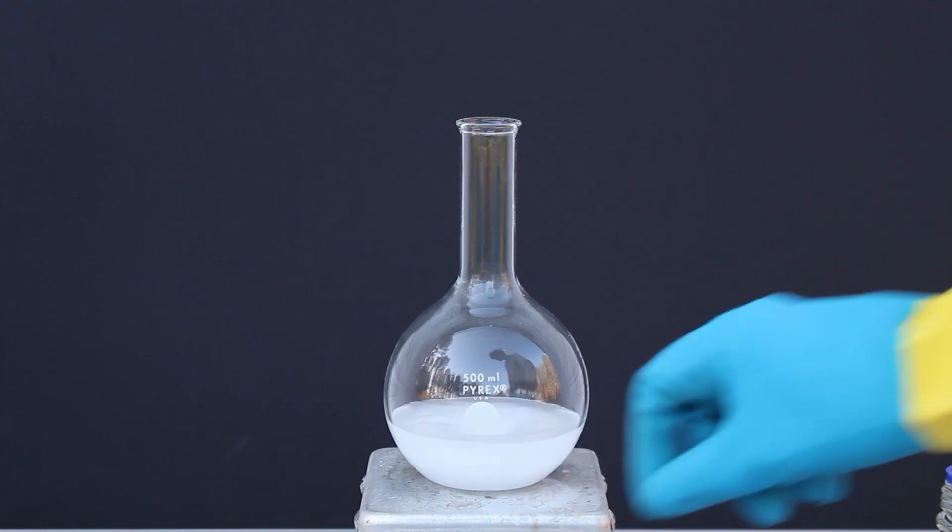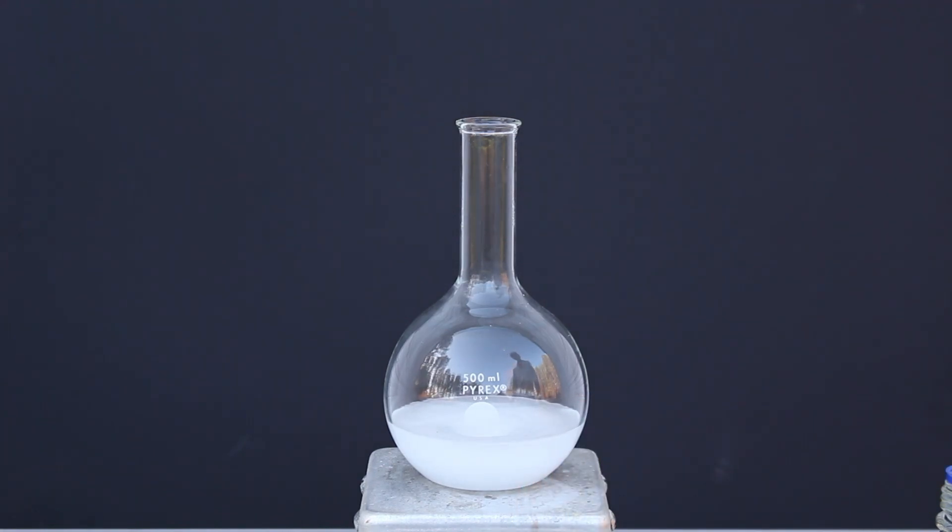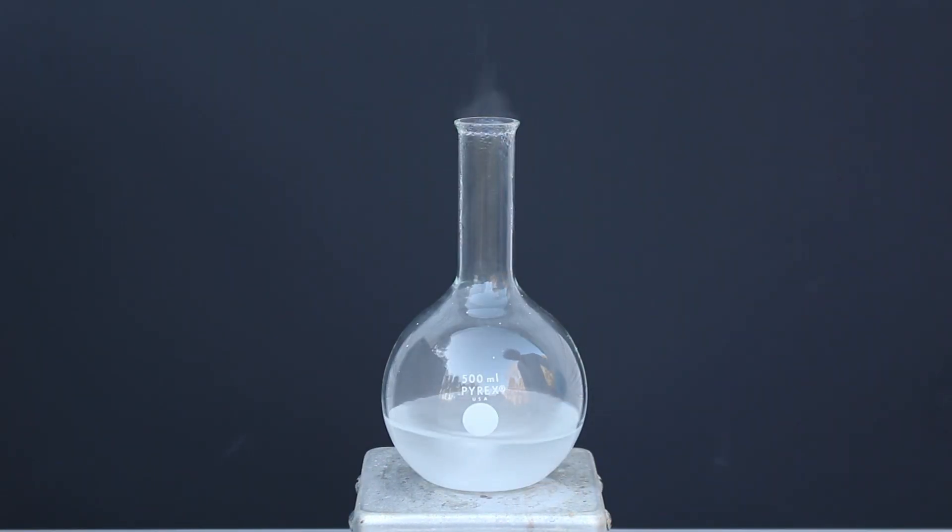So we're going to turn on heating and stirring and bring the solution up to a boil. Once it's boiling, we can start adding our hydrochloric acid solution drop-wise over the period of about 30 minutes or so.